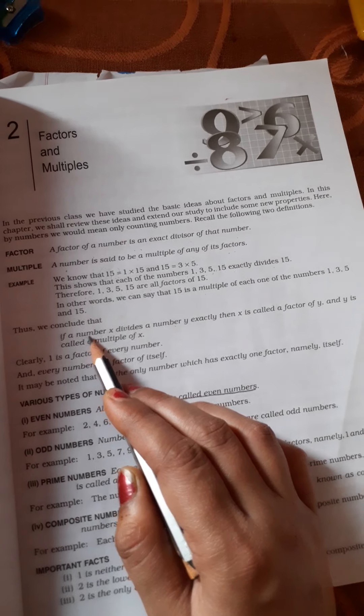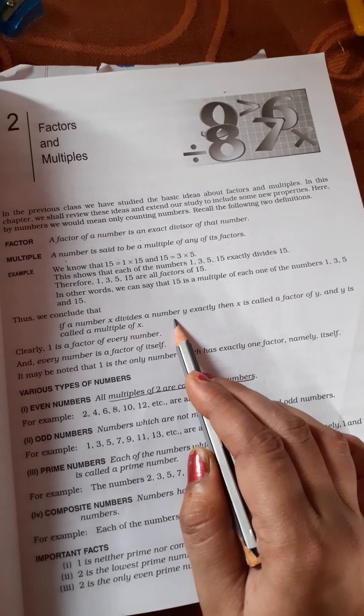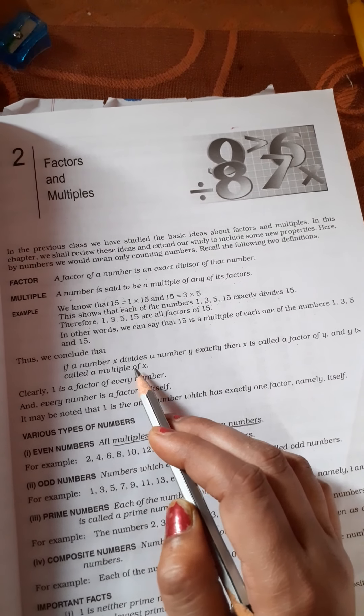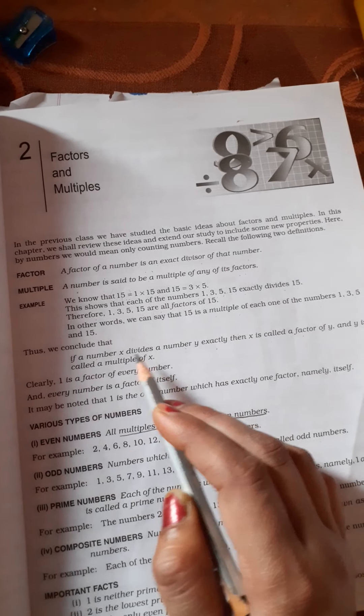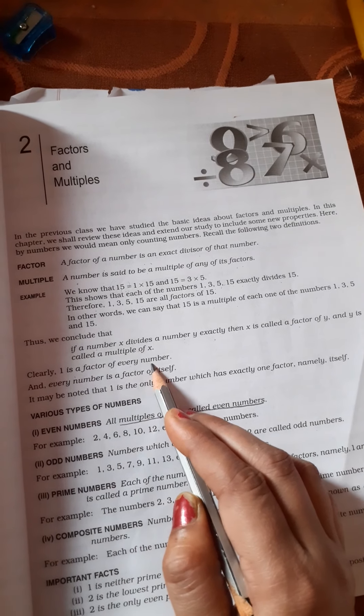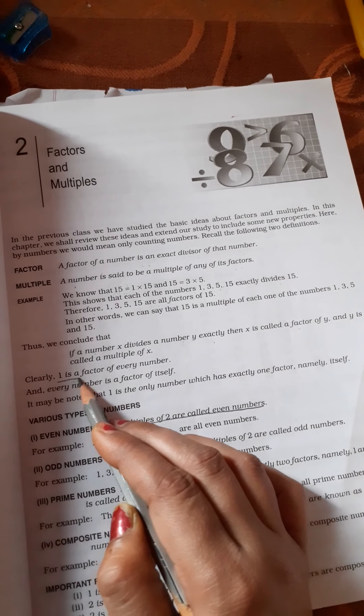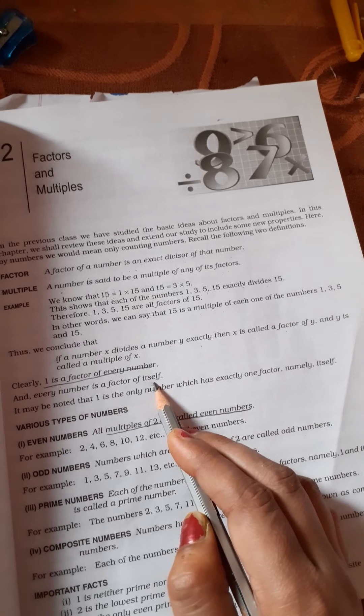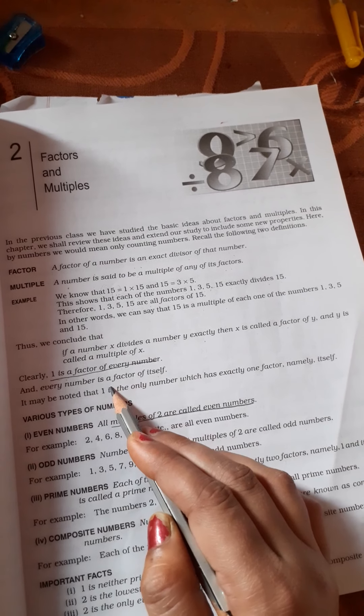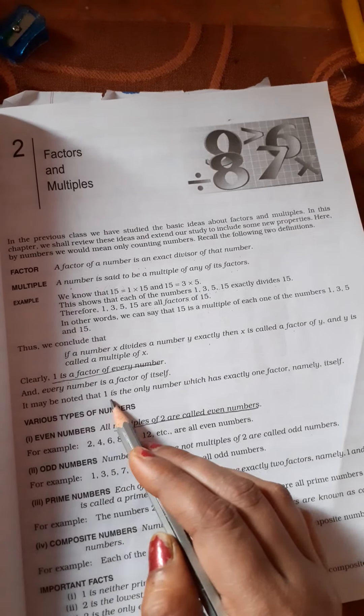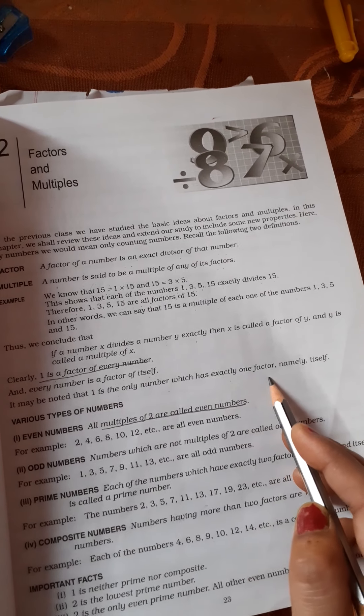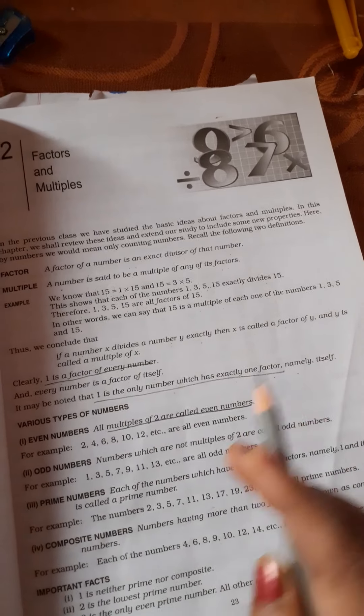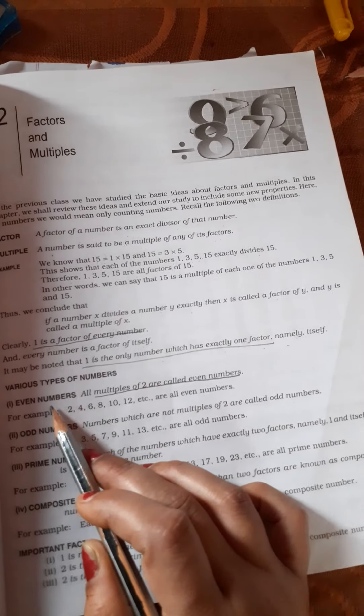So what conclusion can we draw? If a number x divides a number y exactly, then x is called a factor of y and y is called a multiple of x. 1 is a factor of every number, and every number is a factor of itself. It may be noted that 1 is the only number which has exactly one factor, namely itself. These are small questions that can come in fill-in-the-blanks.